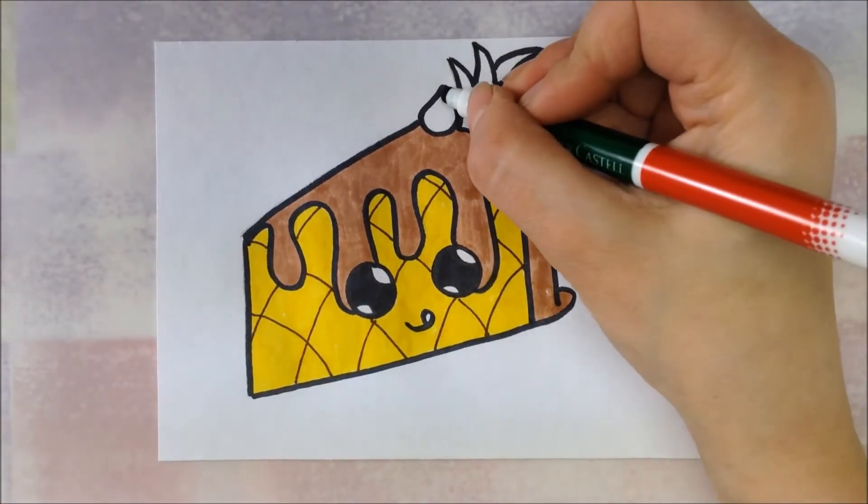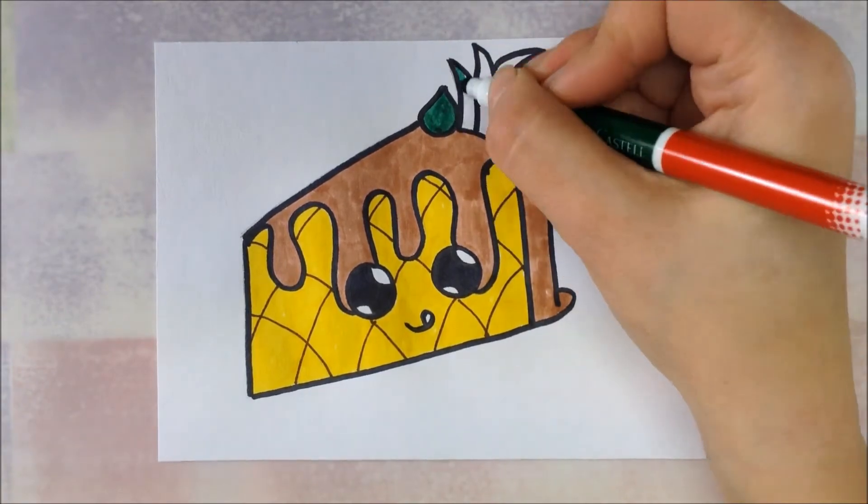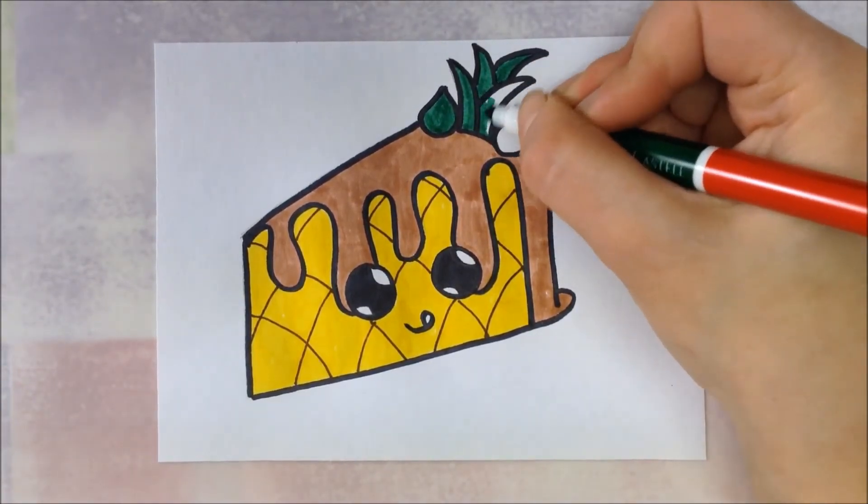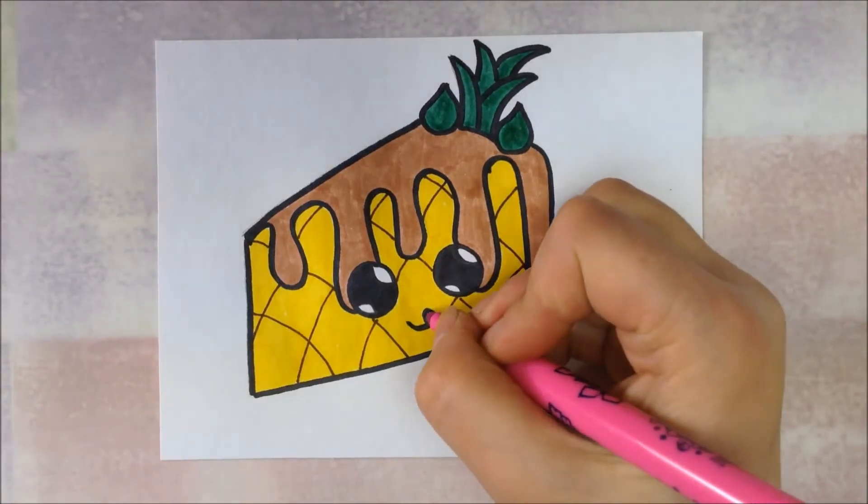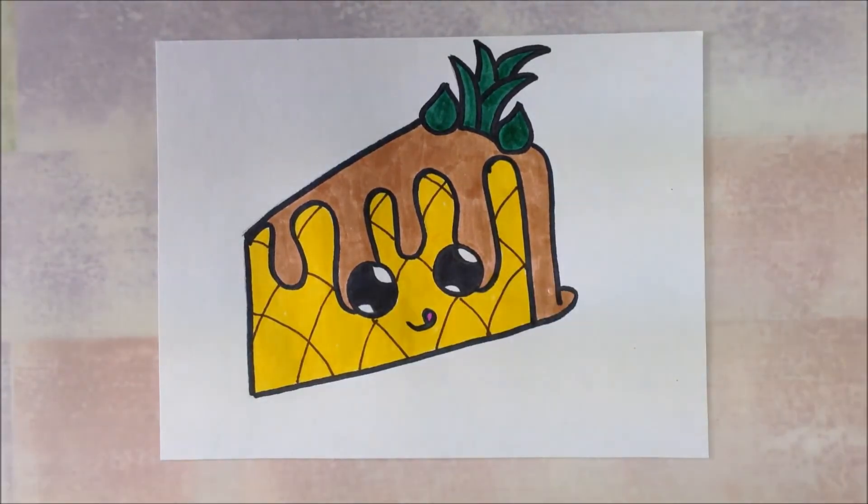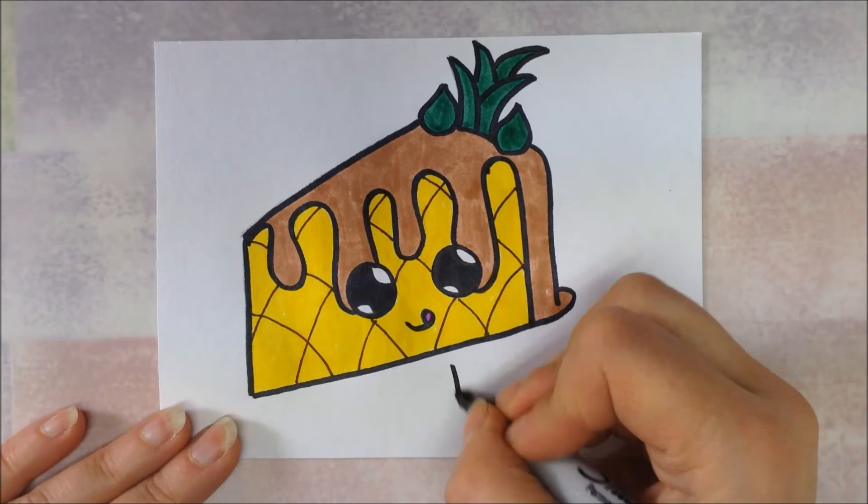So for the dollops of icing on top and the leaves, I'm going to use a green. And now we're going to put a little pink on the tongue. And your pineapple cake is done.